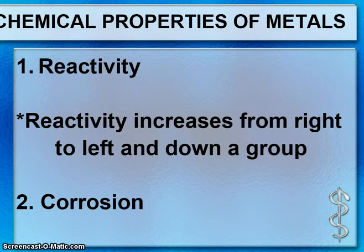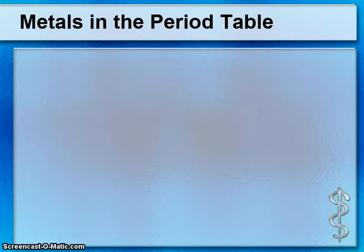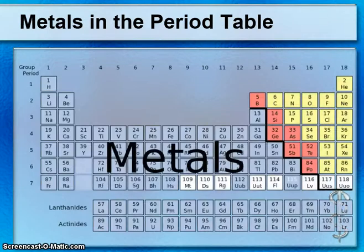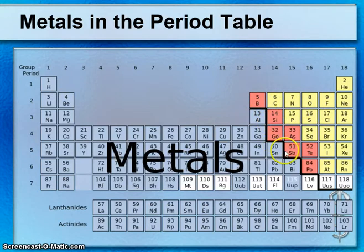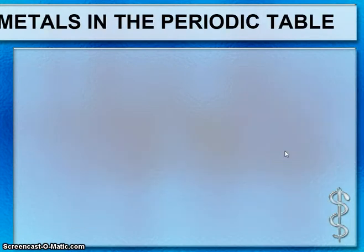Reactivity increases as you go towards the left and down a group, so Group 1 all the way down is the most reactive area of the chart. On the periodic table there's a crooked staircase line — everything to the left are metals, most of the periodic table. To the right of that line are non-metals, and right on the line in red are metalloids.